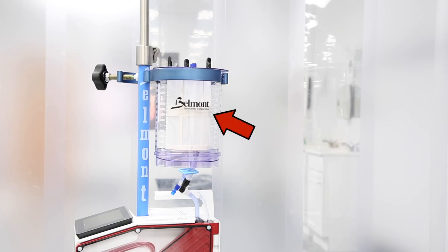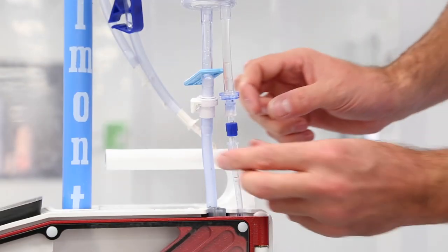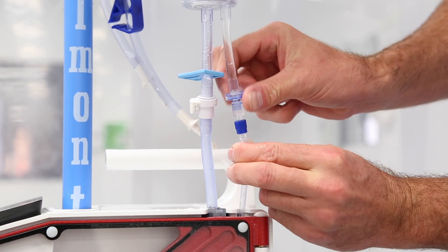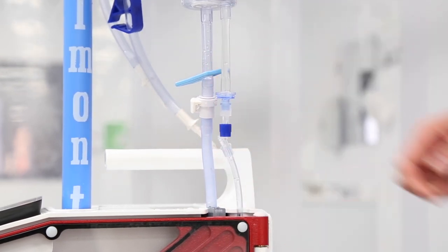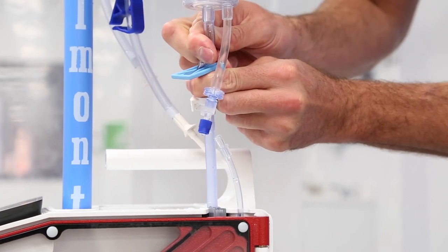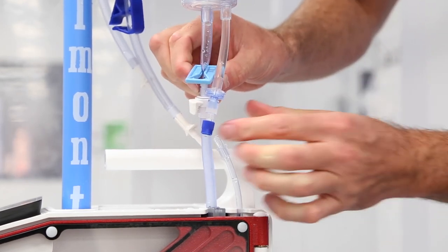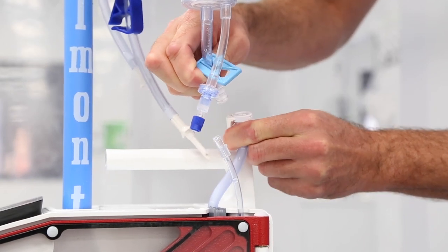The optional large volume reservoir can be added at the beginning or anytime during a procedure. The LVR will hold up to three liters of fluid, has five fluid spikes, and can be added to the system in less than one minute. Disconnect the small reservoir by unscrewing the lower fitting on the recirculation line. If the small reservoir contains fluid, close the blue clamp to prevent a spill before disconnecting the fluid line. Disconnect the fluid line by pressing the quick release tab while separating the fluid tubing.